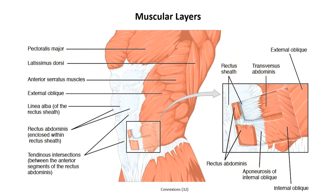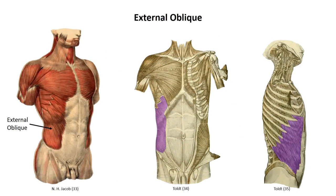Deep to Scarpa's fascia are the myotendinous layers. The oblique muscles originate posteriorly off the ribs and thoracolumbar fascia surrounding the erector spinae muscles, and wrap anterolaterally to fuse with the contralateral side at the midline. Similar to the intercostals, the outermost layer is the external oblique muscles, originating off ribs 5 through 12. The posterior-most fibers run more or less vertically to insert upon the iliac crest, while fibers further anterior run in a more oblique fashion — the same hand-in-pocket orientation seen for the external intercostal muscles.